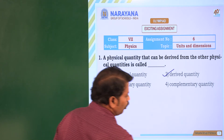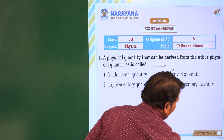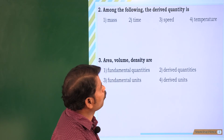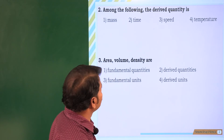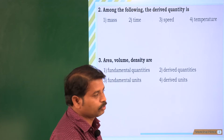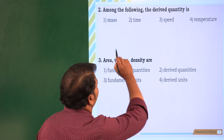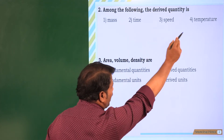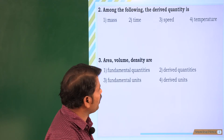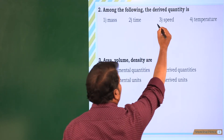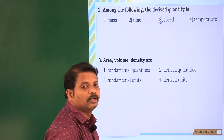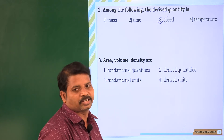Next, question number 2: among the following, the derived quantity is mass, time, speed, or temperature. Clearly, mass, time, and temperature are fundamental quantities. So speed is the derived quantity here. The third option is the correct answer.